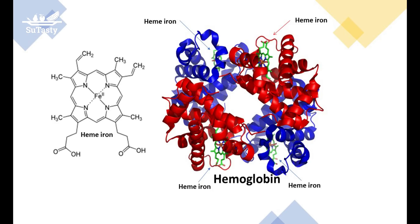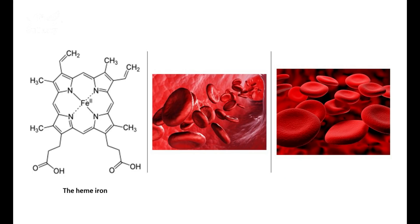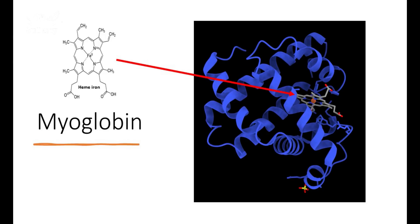Iron exists in hemoglobin as a heme iron complex, which gives the blood its red color. Heme iron is a five-member nitrogen-containing ring molecule with a cage around the central ferrous iron ion. The hemoglobin of the red blood cells binds oxygen in the lungs, transports oxygen to body cells, and carries carbon dioxide away from cells for elimination by the lungs.